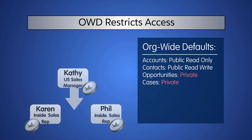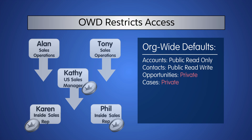However, at AW, the sales managers need to see the opportunities that their teams are working on, so they can run reports and analyze the sales pipeline. Sales operations work on opportunities with both the inside sales reps and the managers, so they need to see all opportunities.